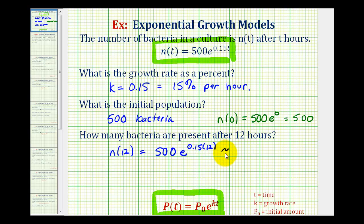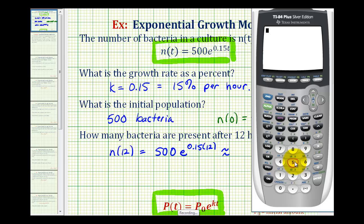We'll go ahead and evaluate this on the calculator. So 500, if we press second ln, or second natural log, it brings up e with the exponent key. So we just type in 0.15 times 12, close parenthesis. If we round this to the nearest bacteria, it would be approximately 3,025 bacteria.